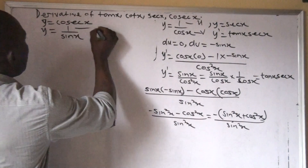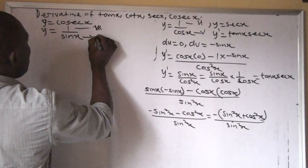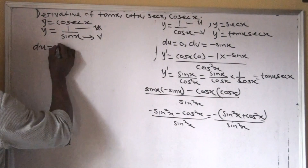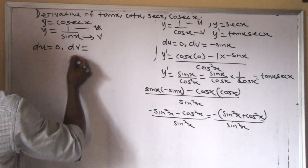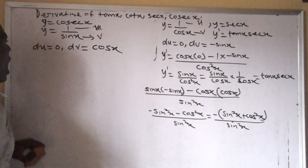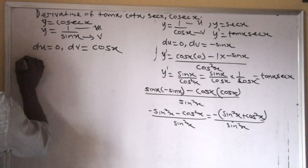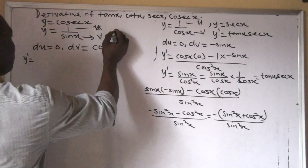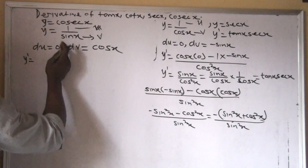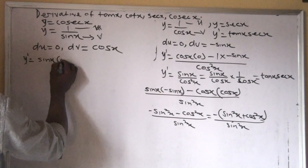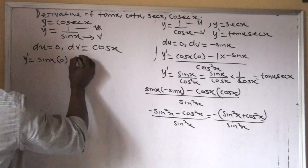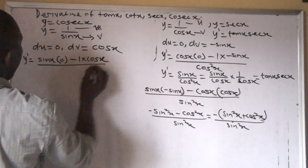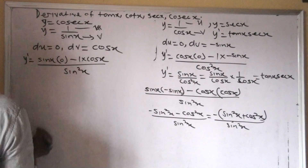Our u is the numerator, which is 1. And our v is the denominator, sin x. Our du/dx is zero, and our dv/dx is cos x. Applying this in the formula, y prime equals: v·du — which is sin x times zero — minus u times dv, which is 1 times cos x, all over sin squared x.